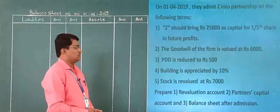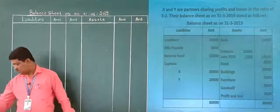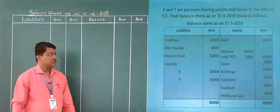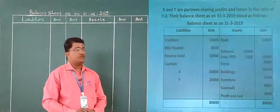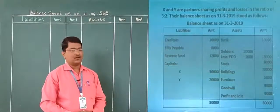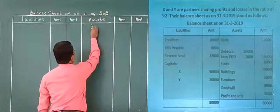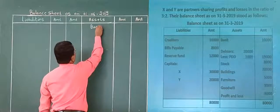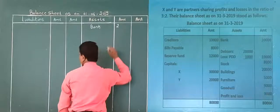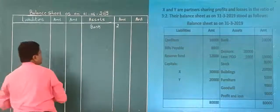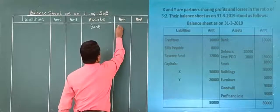This is their given balance sheet. First, the asset side. What is the first one on the asset side? We write bank. What is the bank amount? It is 10,000. I will write here 10,000.